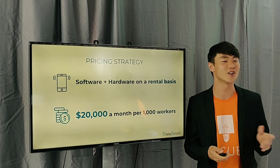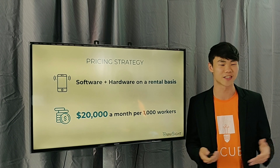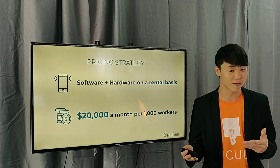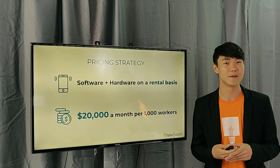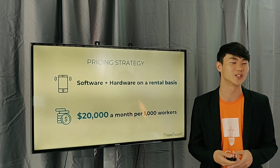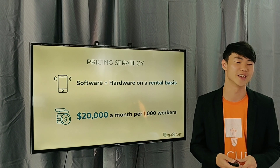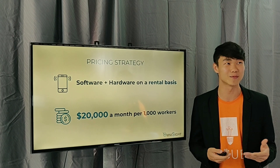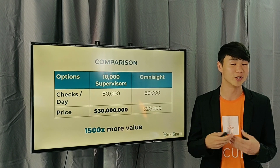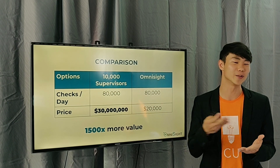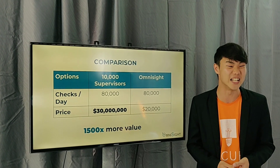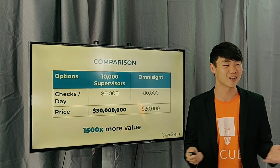Our pricing strategy is a software plus hardware model. We charge $20,000 a month per 1,000 workers. For reference, the budget for 67 supervisors doing the same job is $200,000 a month — so we charge 10 times less. By comparison, we perform 80,000 checks a day; if they were to hire supervisors to do that, it would cost $30,000,000 — but with us it costs only $20,000.